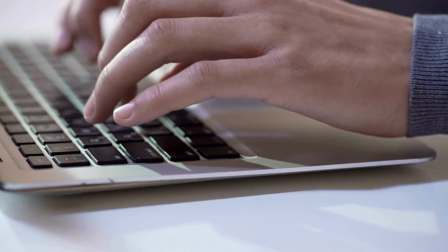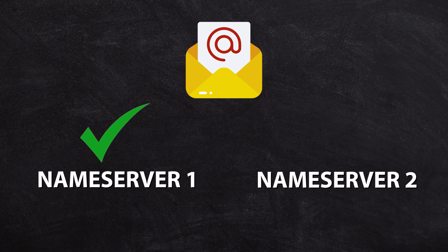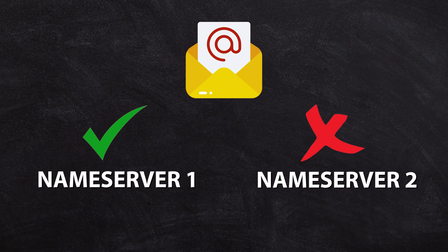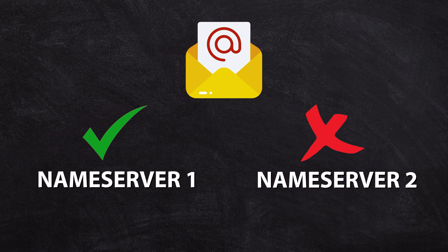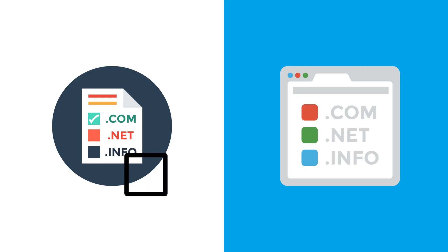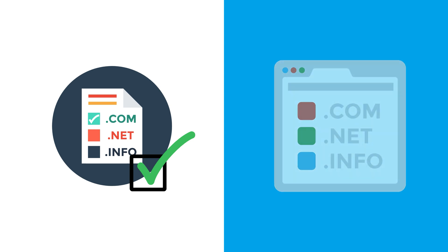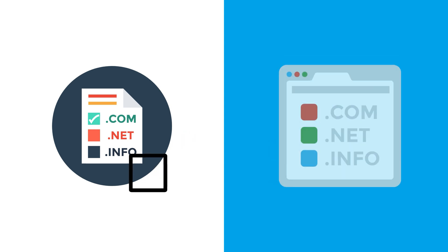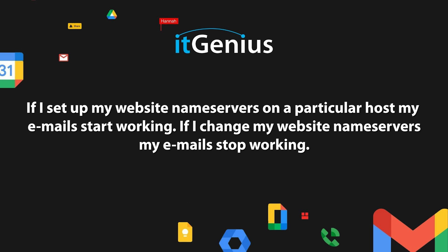If your emails are working with one set of name servers but not another, that means one of those is configured incorrectly. You're likely switching between one set of DNS records which is correct, and another set which is missing records. That probably means you're missing your MX records or mail records in the name servers you're pointing to when it doesn't work.